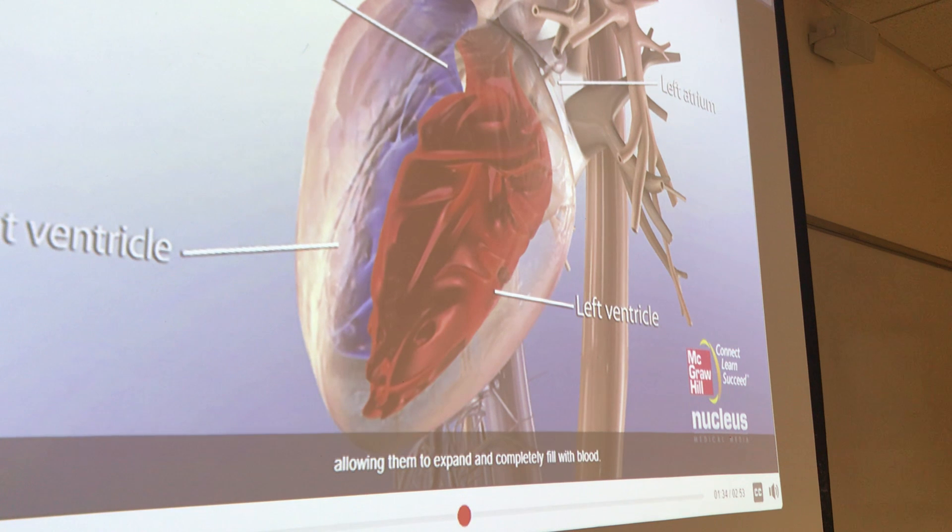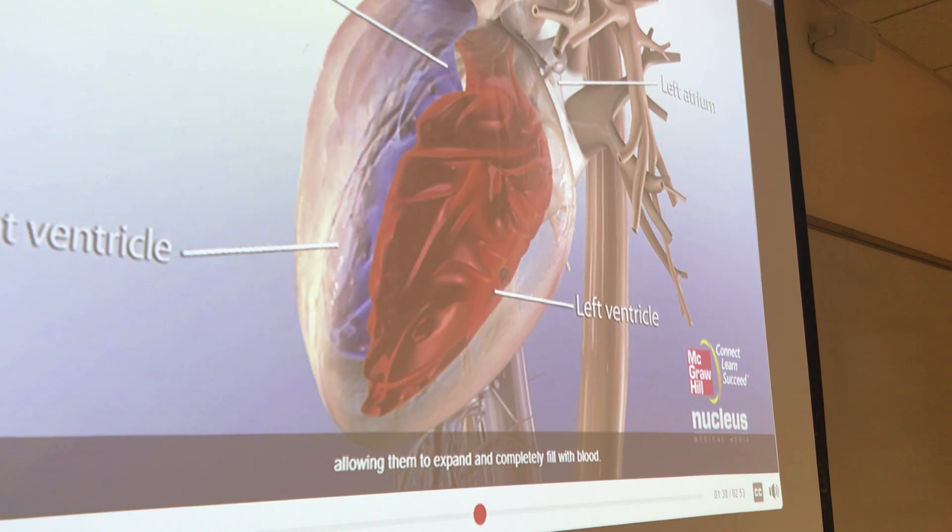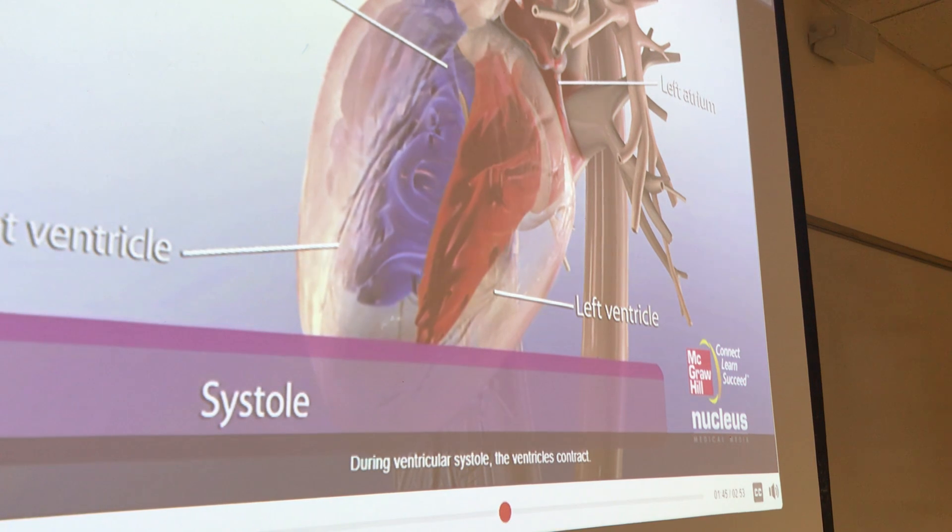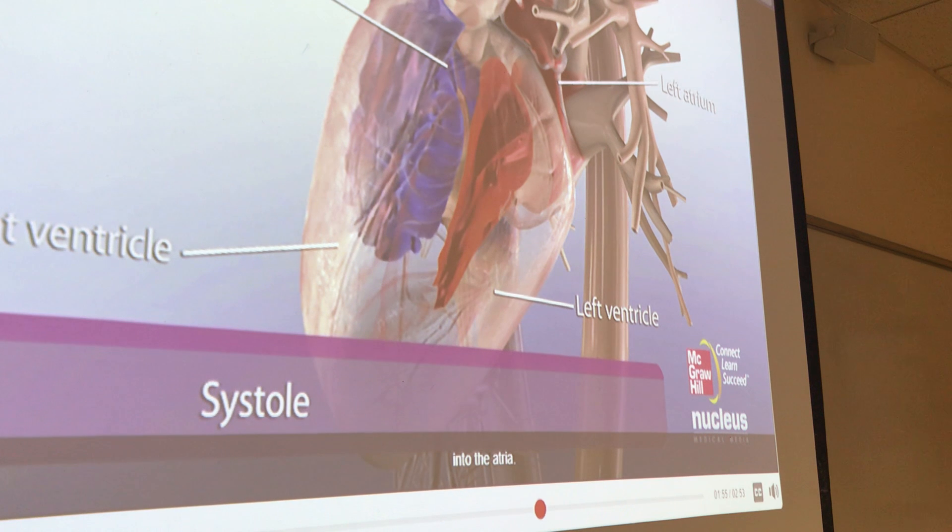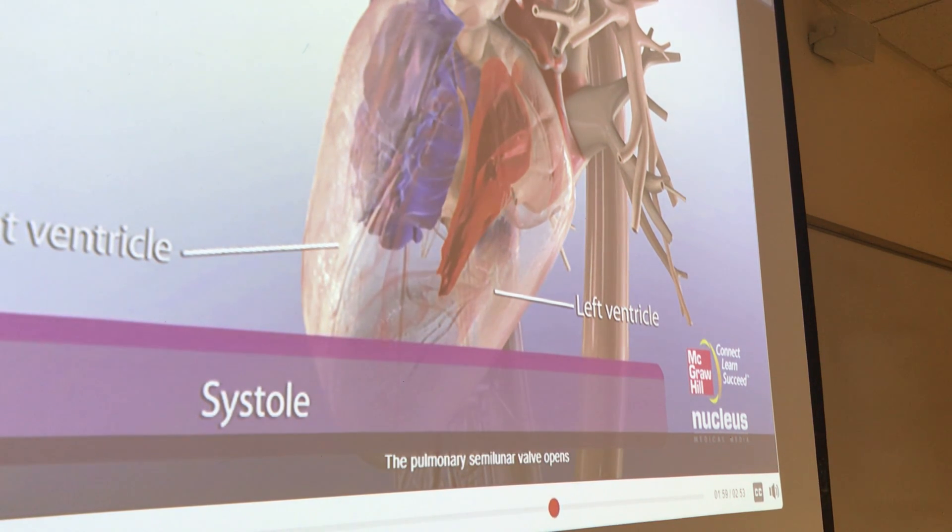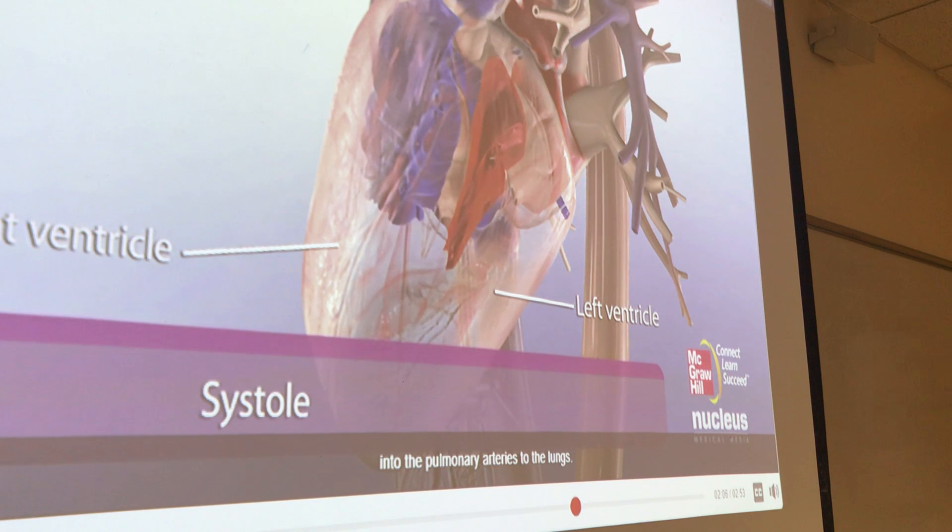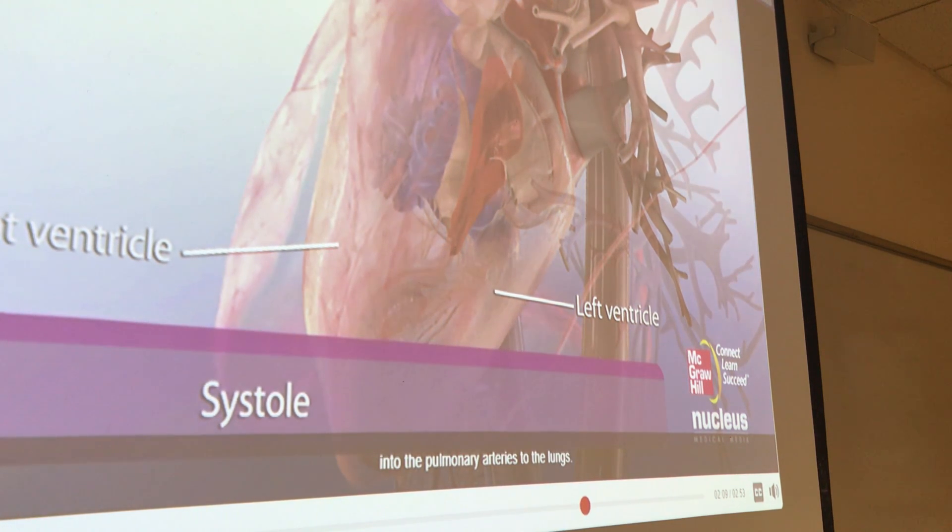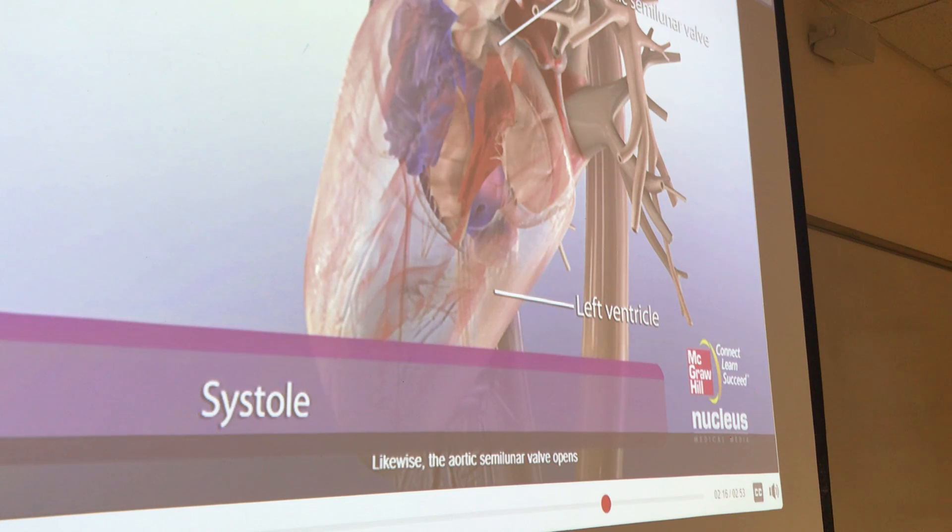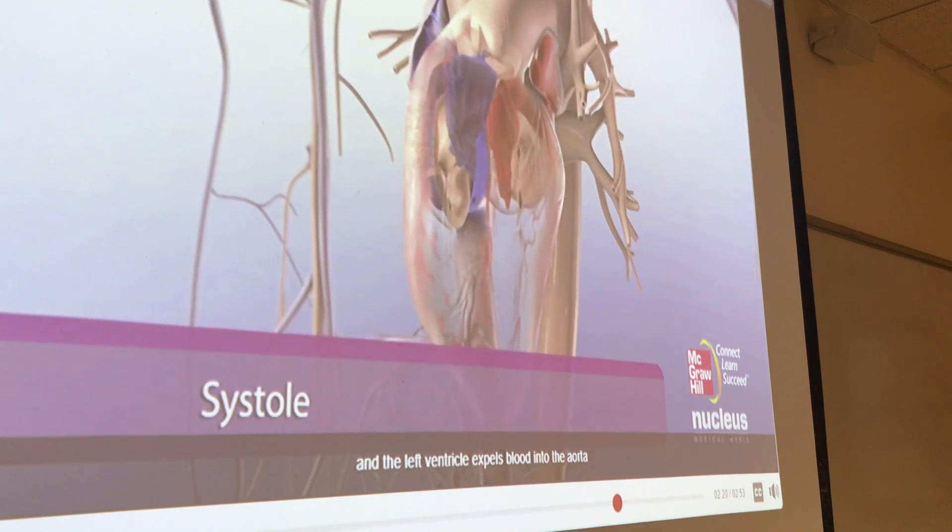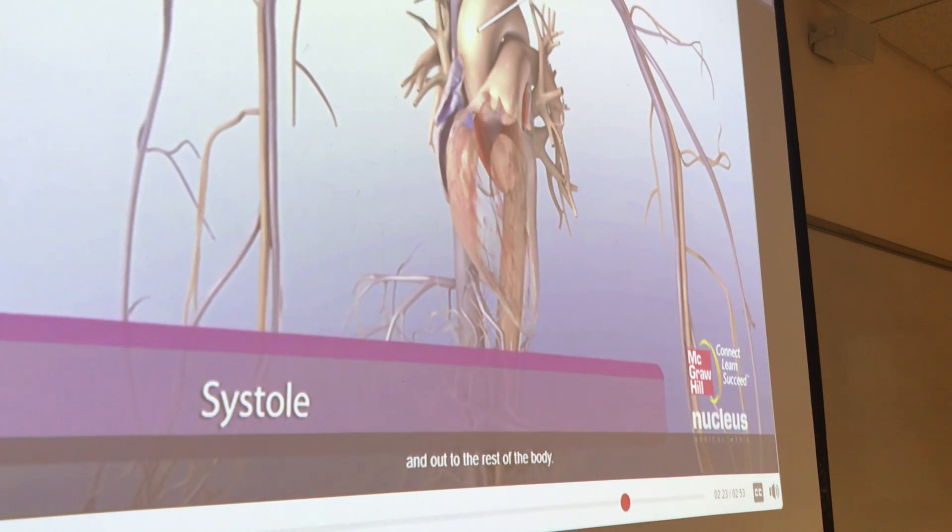During ventricular systole, the ventricles contract. The atrioventricular valves close, preventing backflow or regurgitation of blood into the atria. The pulmonary semilunar valve opens and the right ventricle expels blood into the pulmonary arteries to the lungs. Likewise, the aortic semilunar valve opens and the left ventricle expels blood into the aorta and out to the rest of the body.